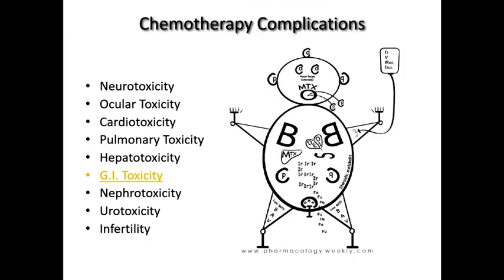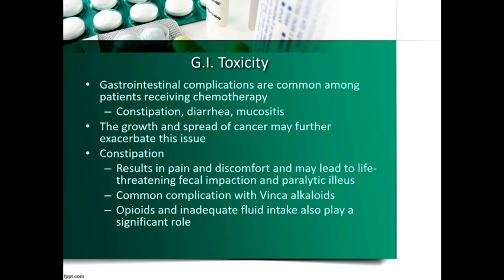GI toxicity — irinotecan and 5-FU can cause GI toxicity including constipation, diarrhea, and mucositis. For constipation, the biggest culprits are vinca alkaloids, which damage the autonomic nervous system and reduce peristalsis in the small intestine and colon. This can lead to impaction, ileus, and full obstruction. Also, these patients are often on high-dose opioids for cancer pain, which can further exacerbate constipation.